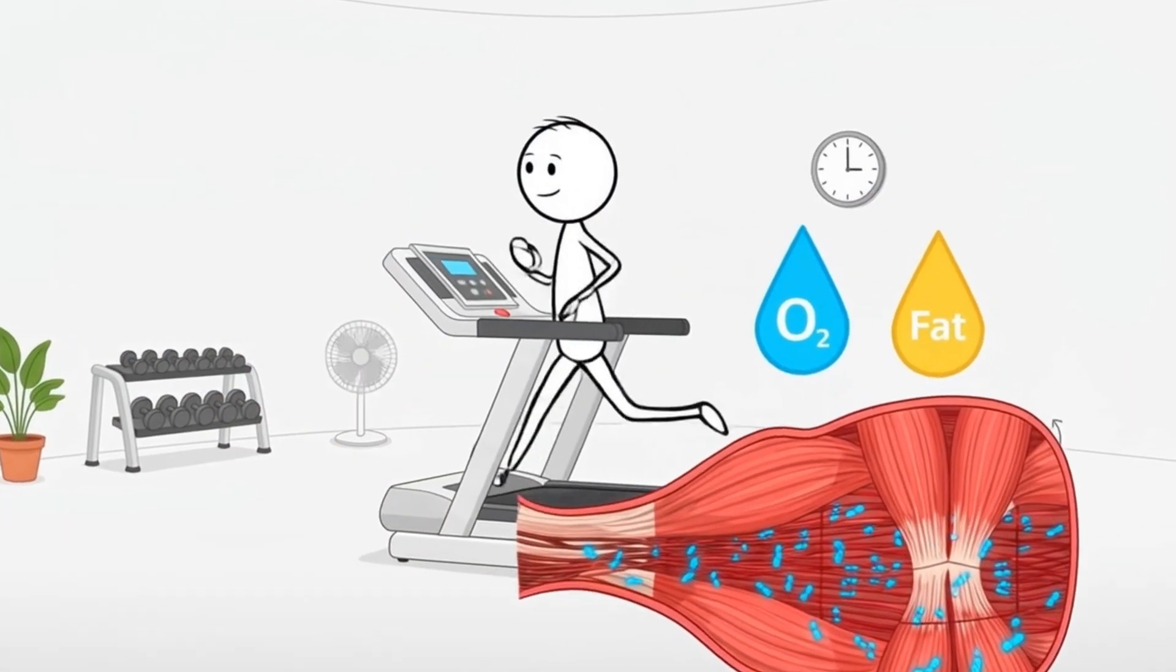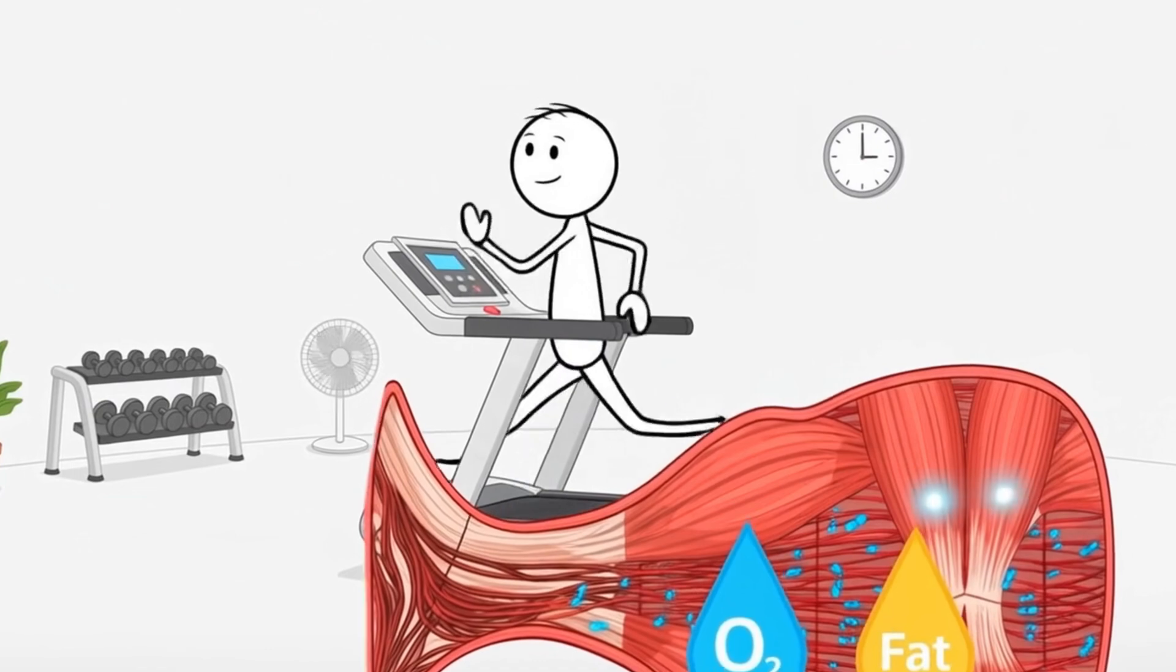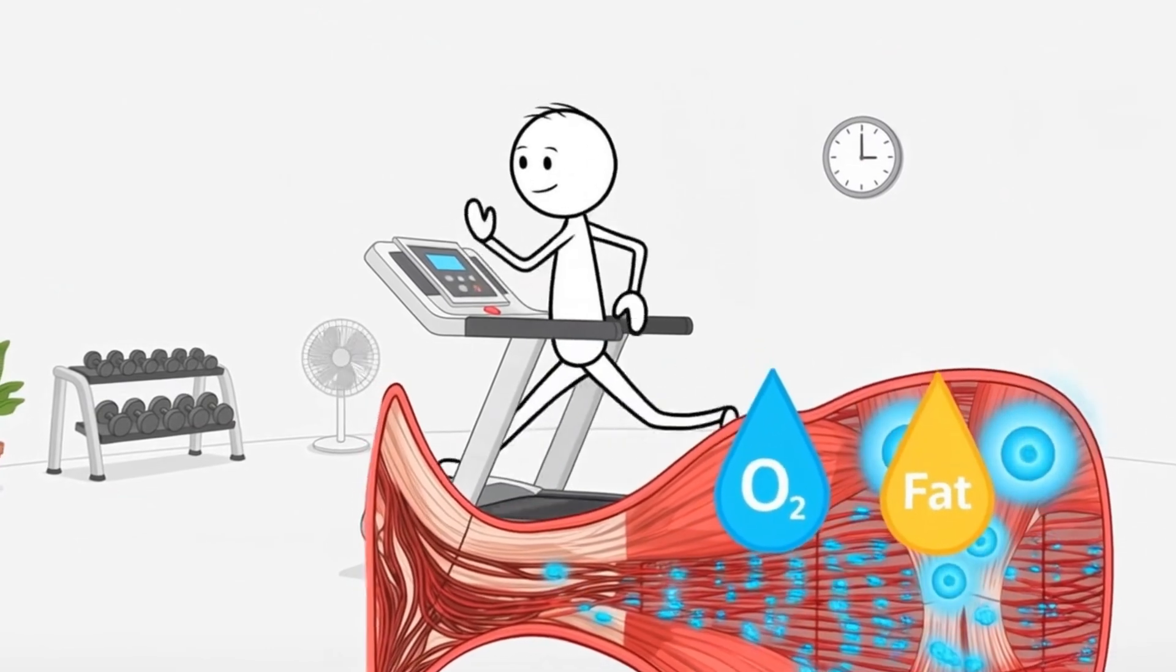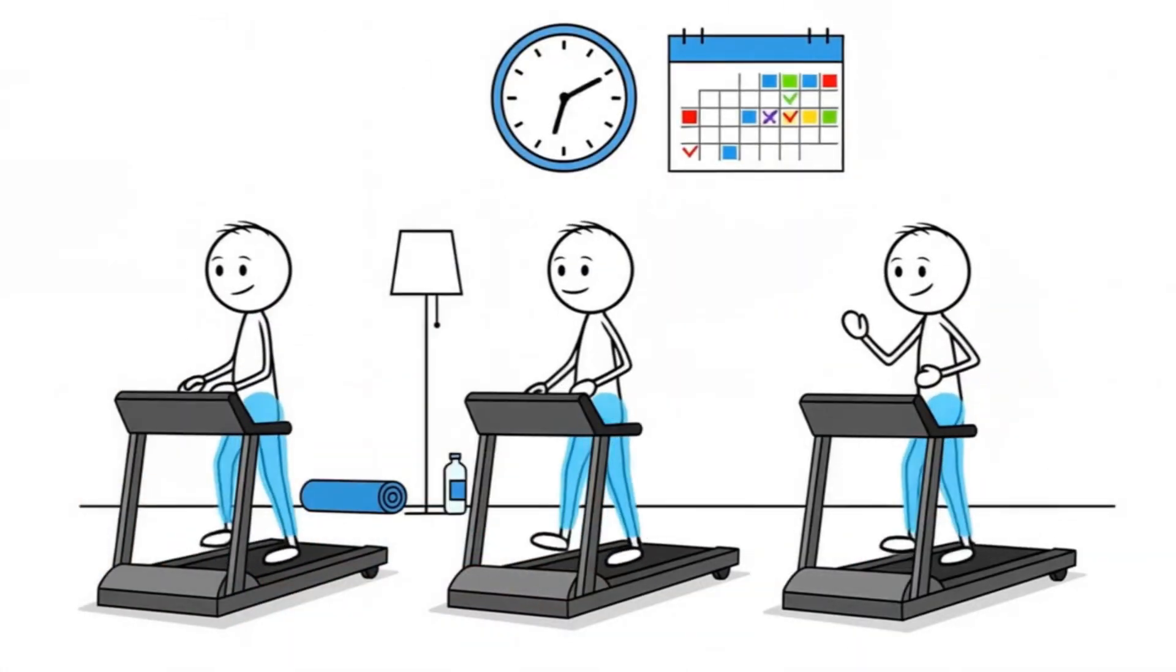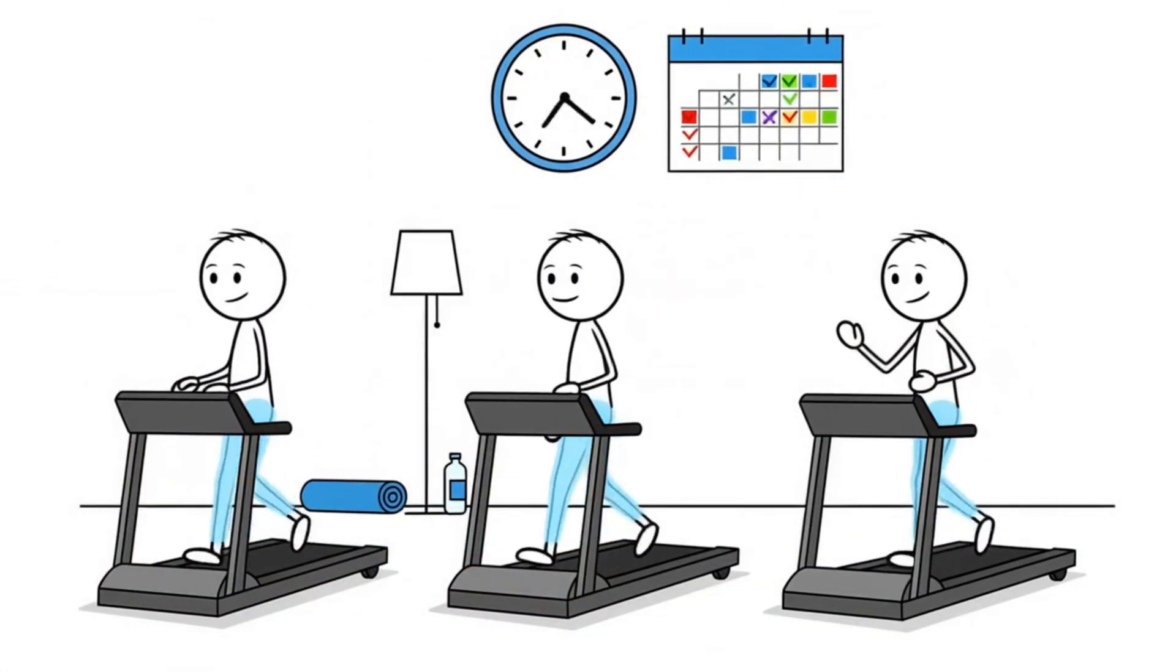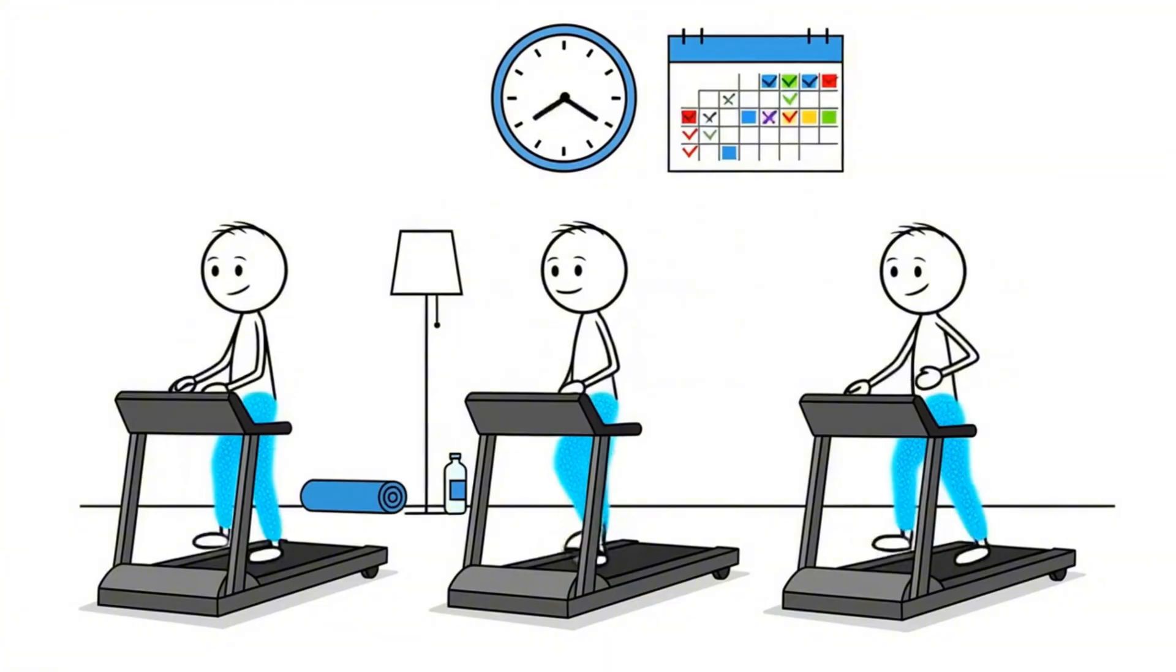This switch also activates slow twitch muscle fibers, which are packed with mitochondria. These fibers thrive on oxygen and fat. When you train them repeatedly, they grow stronger and multiply their mitochondrial content.